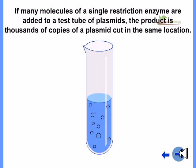If many molecules of a single restriction enzyme are added to a test tube of plasmids, the product is thousands of copies of a plasmid cut in the same location.